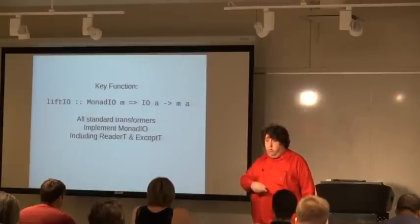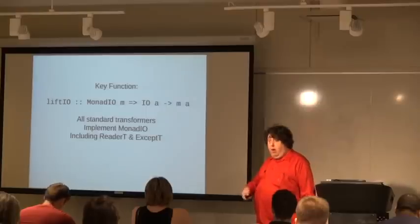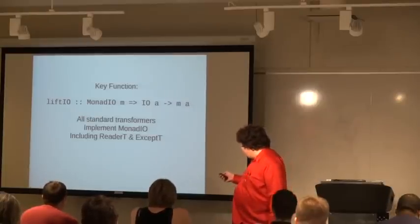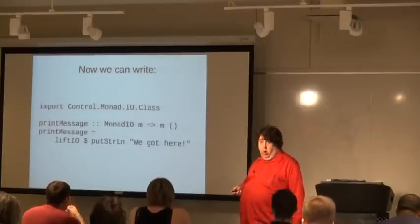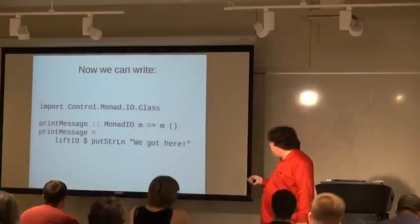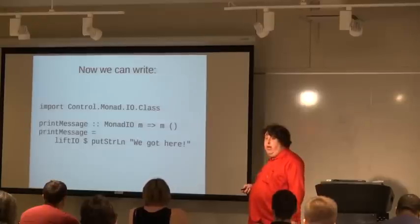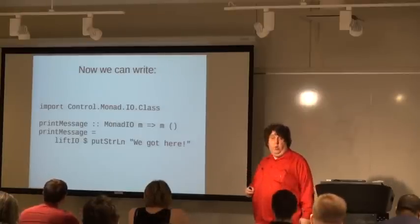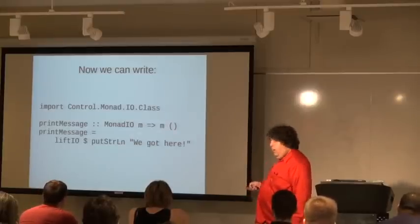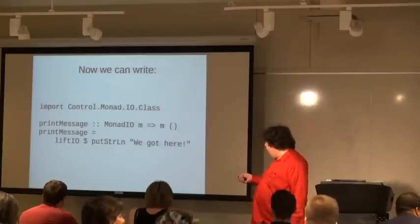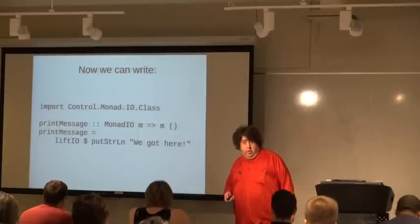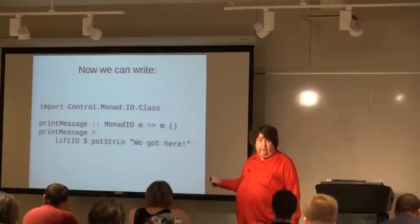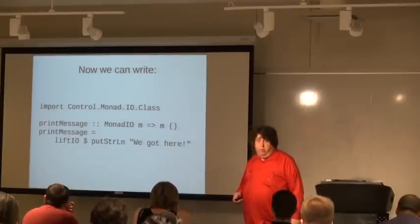All we have to do is add MonadIO to our deriving clause with GeneralizedNewtypeDeriving and we get it automatically. This allows us to write much nicer code. Here's our printMessage again — it doesn't care what Monad it is, so long as it's some stack of Monad transformers on top of the IO Monad. It just does liftIO on our putStrLn. We don't have to remember how many lifts to put. If we change the definitions of the Monads later, we don't have to come back and fix this.